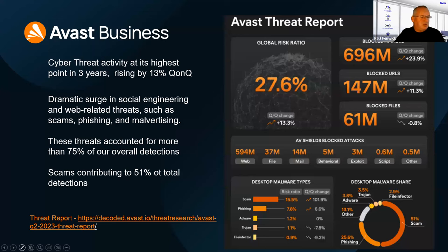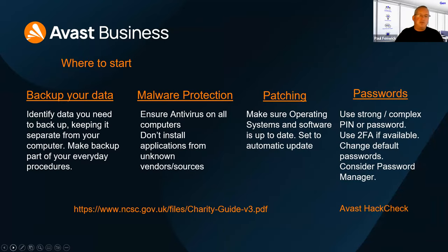If you wish to get more information on the threats we see and some helpful advice, there is the decoded.avast.io website, which goes through how specific threats are being created and how they work. So the big question today is: where do we start? There's a lot of information online — who do we trust? I would recommend going through the NCSC government website. It's impartial. The first thing would be identifying and backing up your data — what is important to the charity and where is it located?